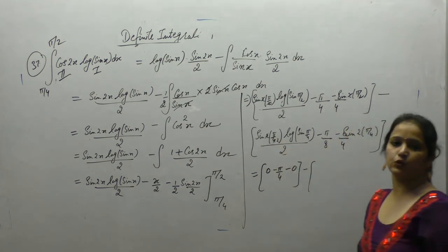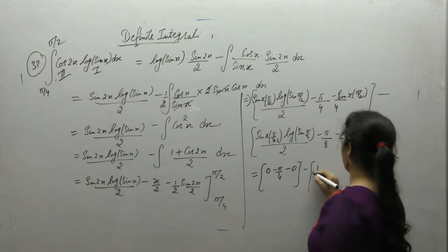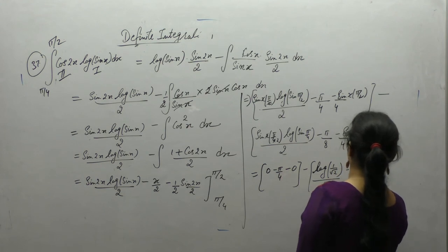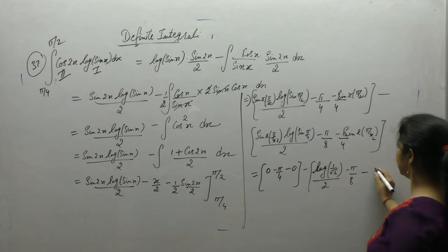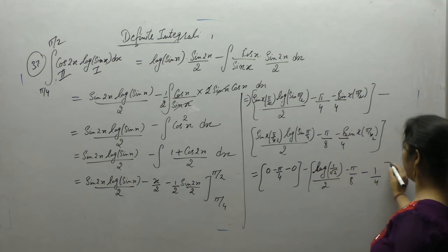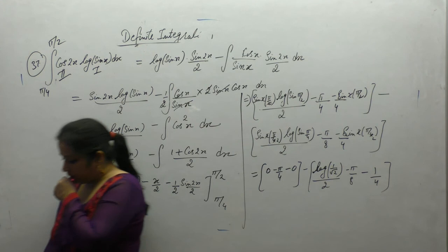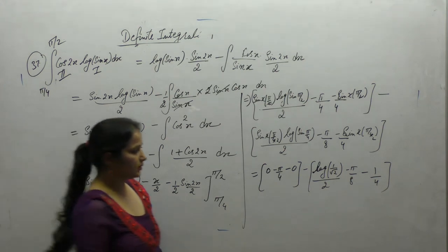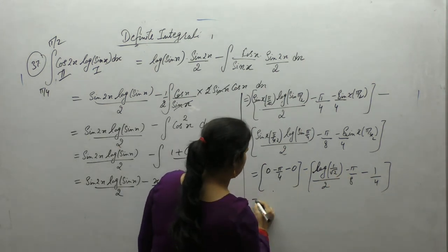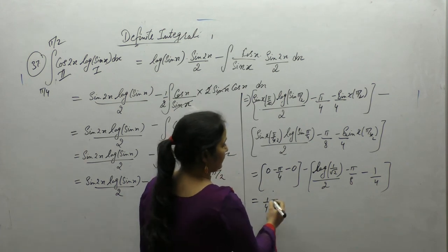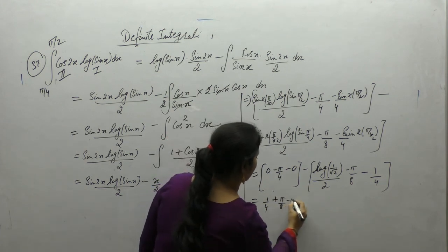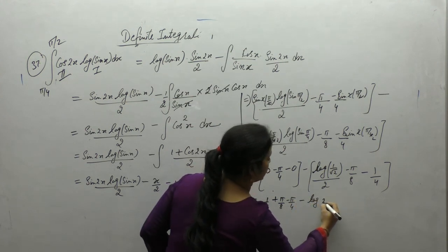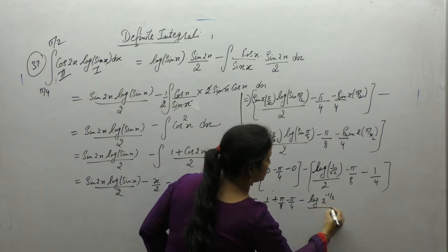Sin(π/2) is 1. Log(sin(π/4)) — sin(π/4) is 1 by root 2. Minus π by 8, sin(π/2) is 1, upon 4. Then minus minus gives plus 1 by 4, plus π by 8 minus π by 4 minus log of 2 to the power minus 1 by 2, upon 2.